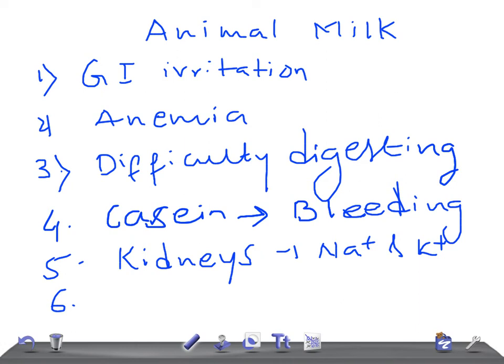The low iron content of animal milk leads to iron deficiency anemia. In your exam, they may give a scenario where a patient has been fed on cow's milk for one year and ask which could be the cause of anemia — remember, if it's iron deficiency anemia and the baby is on animal milk, it's due to the animal milk.